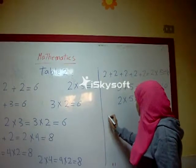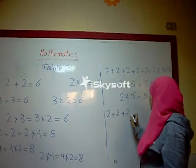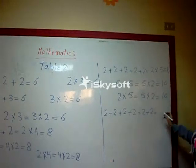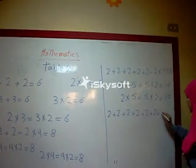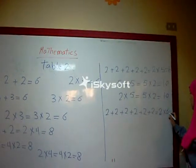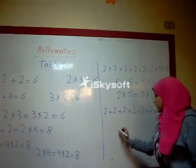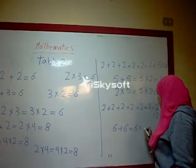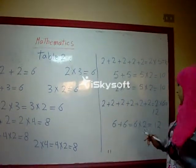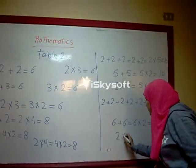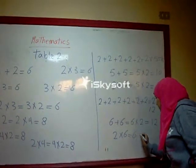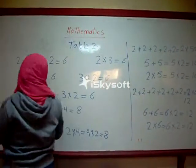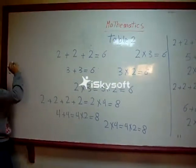Two plus two plus two plus two plus two plus two equals two times six equals twelve. Six plus six equals six times two equals twelve. Then we get two times six equals six times two equals twelve.